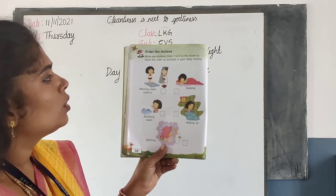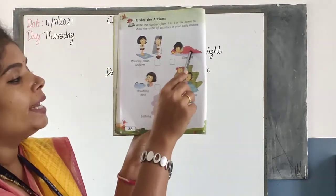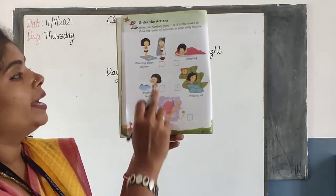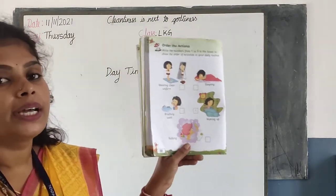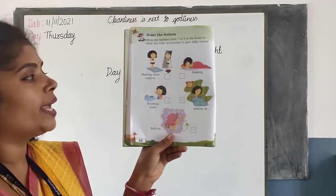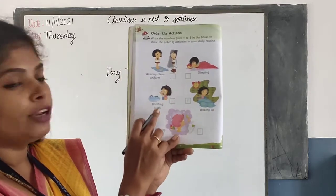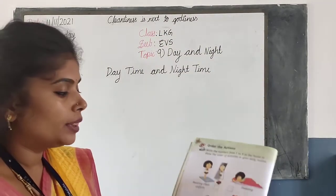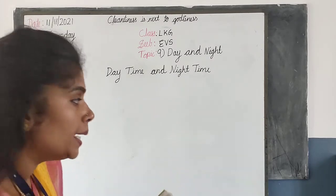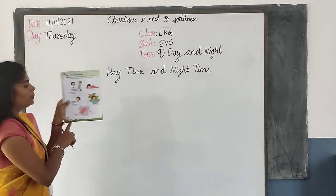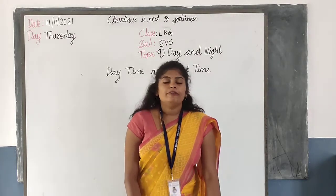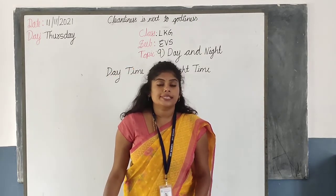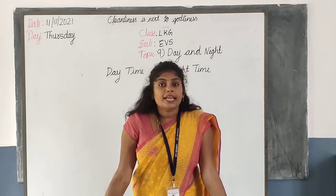For sleeping, we will sleep at night. First is sleep, second is wake up from bed, third is brushing our teeth, fourth is take bath, then fifth is wearing clean clothes. So the order is: first we sleep, next we wake up from bed, then we brush our teeth, then we take bath, then we wear our uniform and go to school.